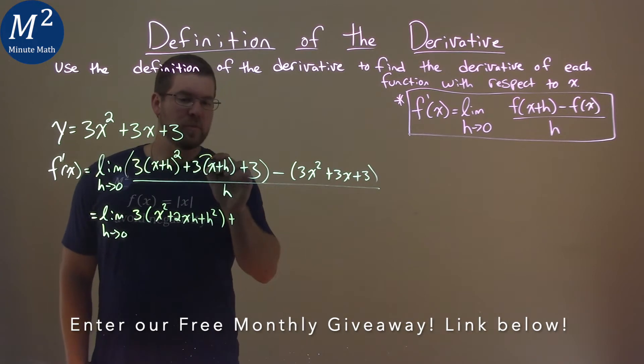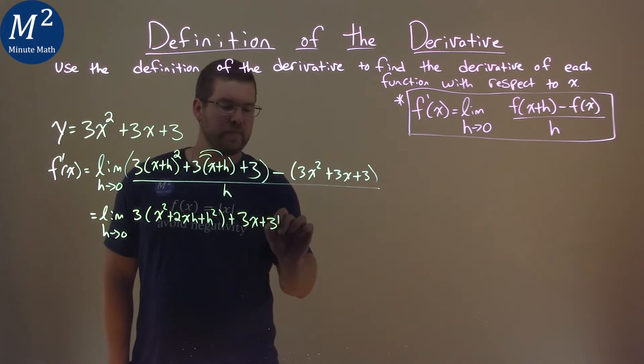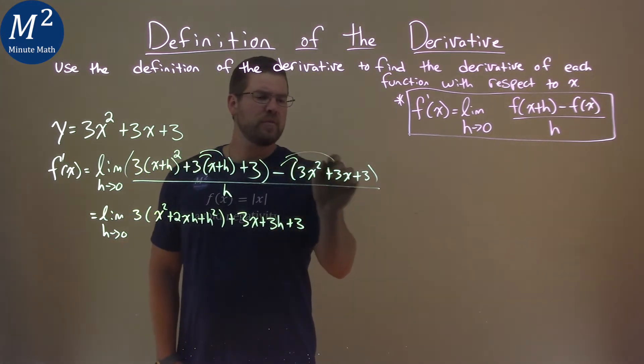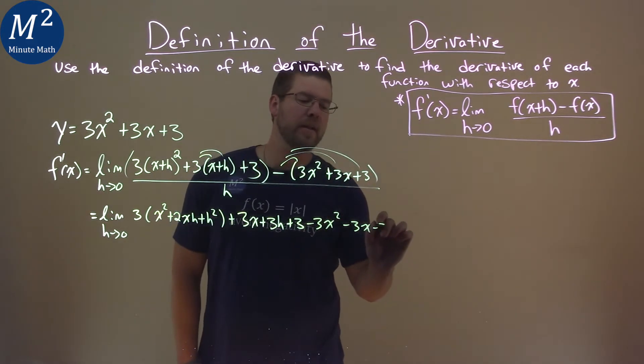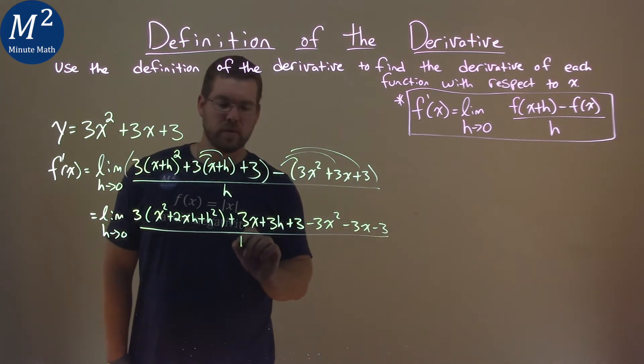Now we have, let's distribute the 3 across here: plus 3x plus 3h. Now we have plus 3. Now distribute this minus sign across here: minus 3x squared, minus 3x, minus 3. Again, all over the lonely h.